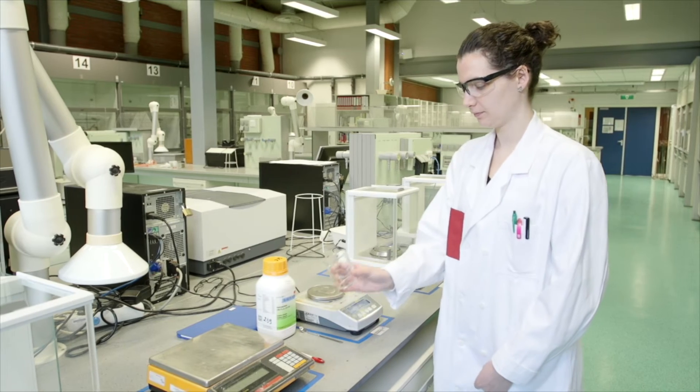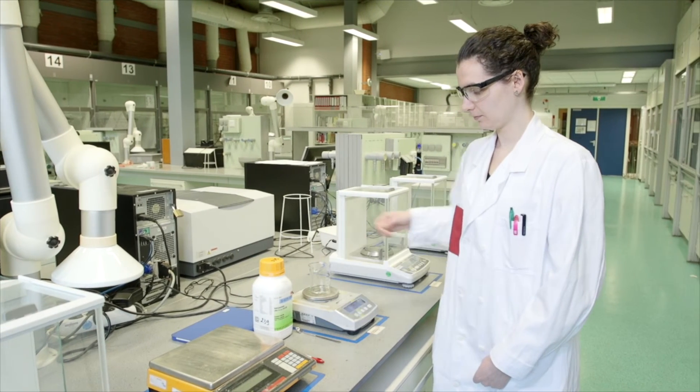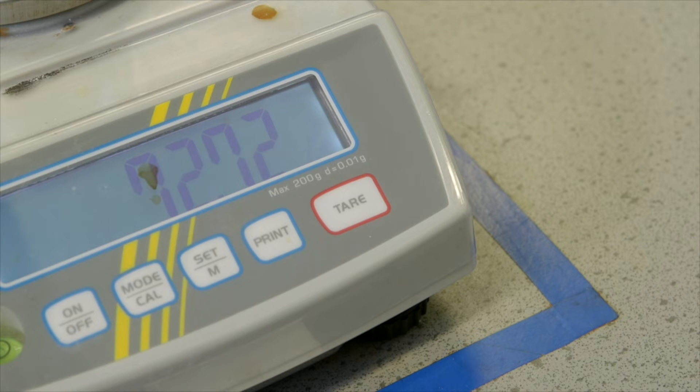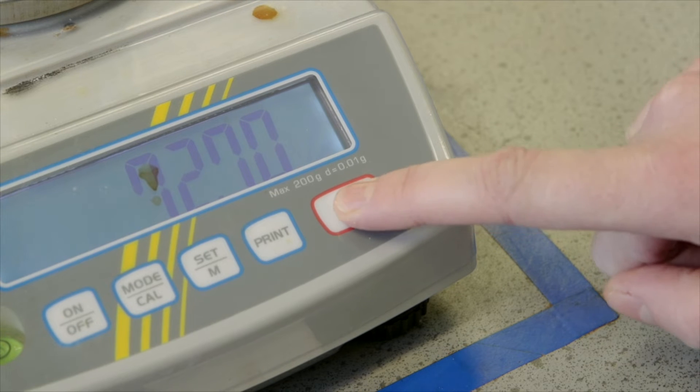When weighing a solid, a beaker is used. The beaker is put on the weighing section and the tare button is pressed. The balance now stands at zero.